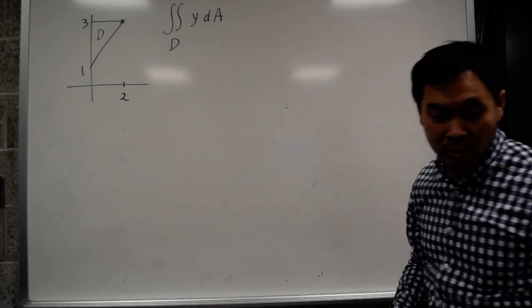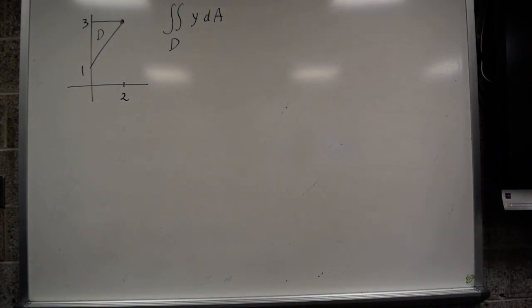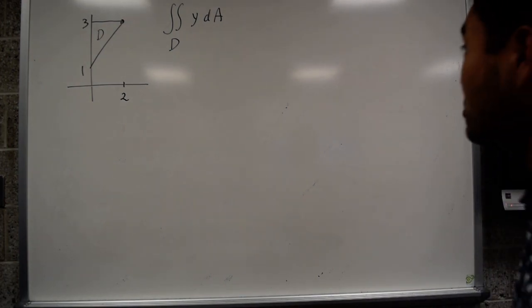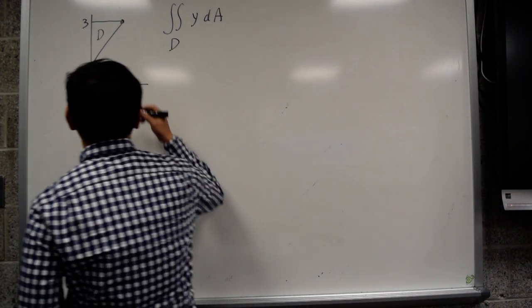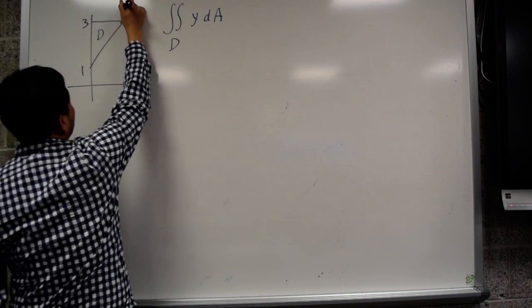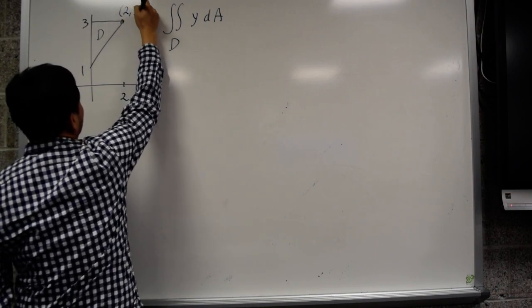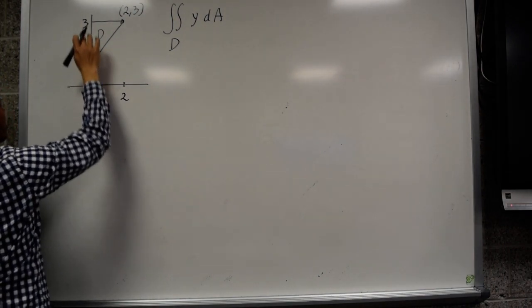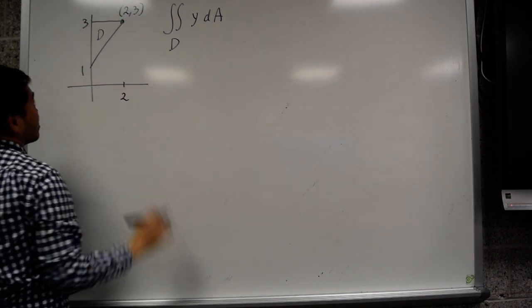Many people struggle with understanding how to write down the bounds for the double integral. So let's say you have this triangular region and the corners are 1 and 3 on the y-axis and 2, 3.